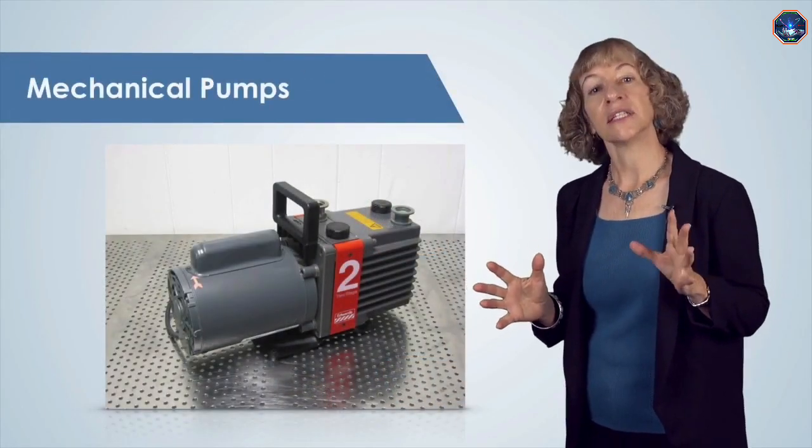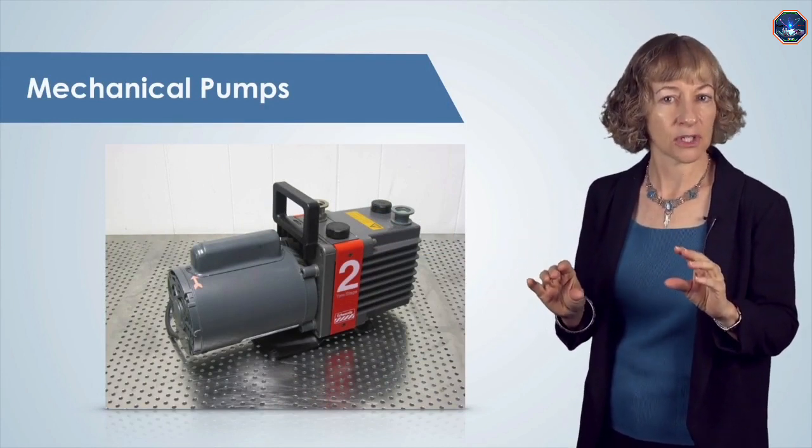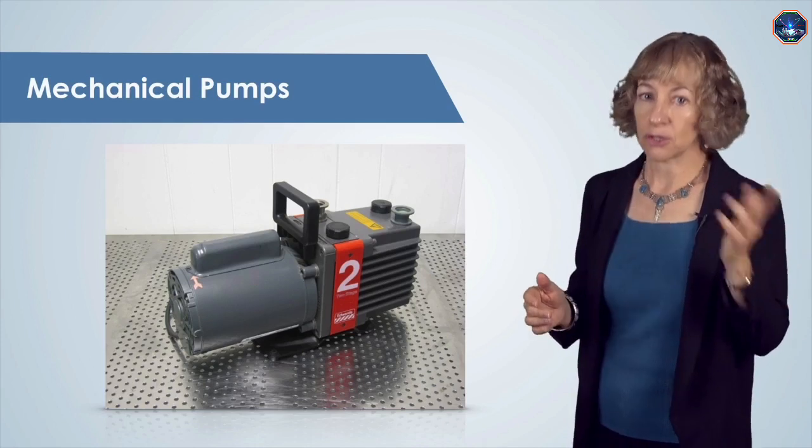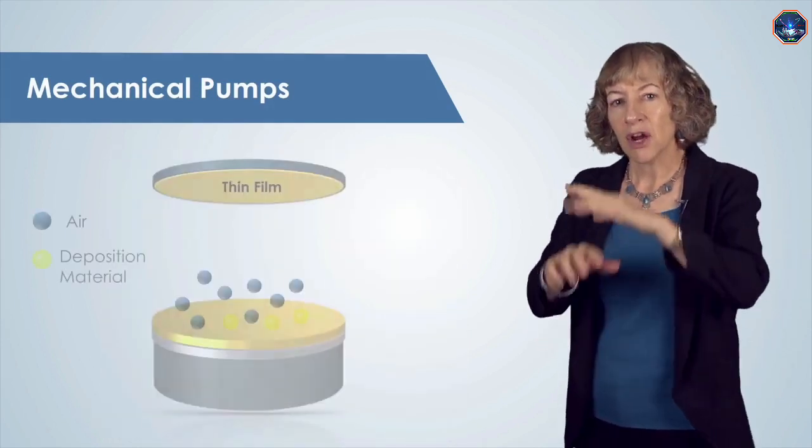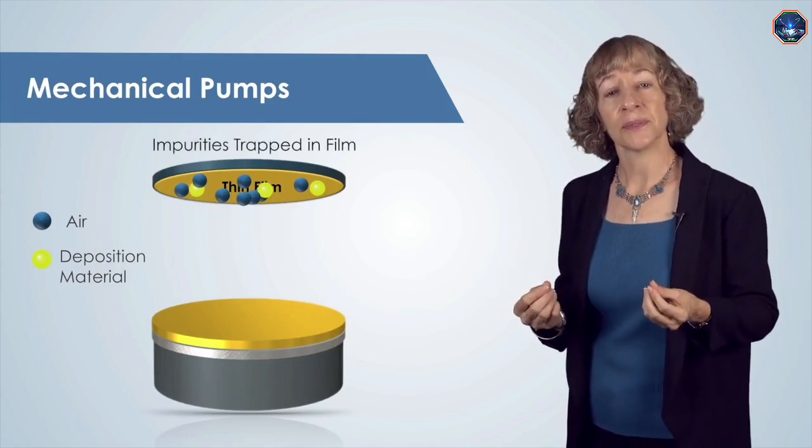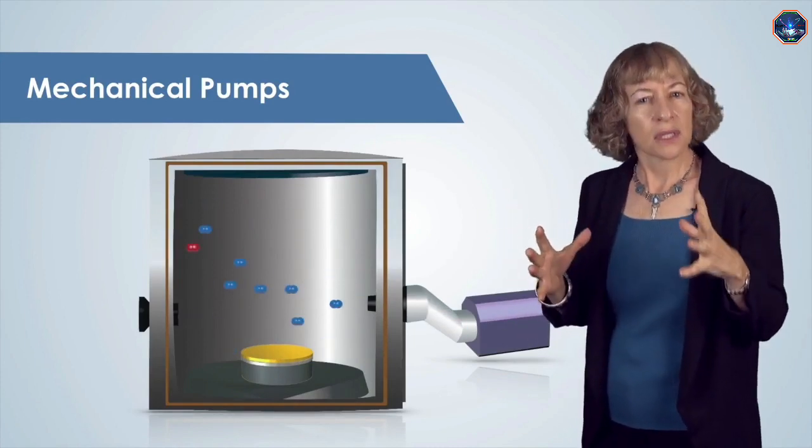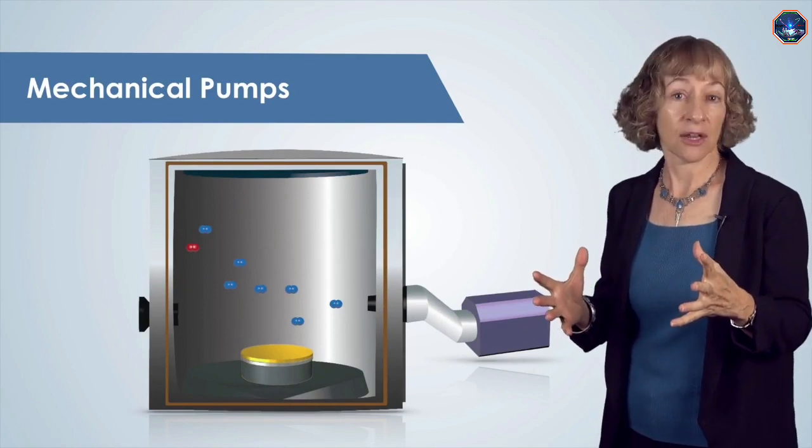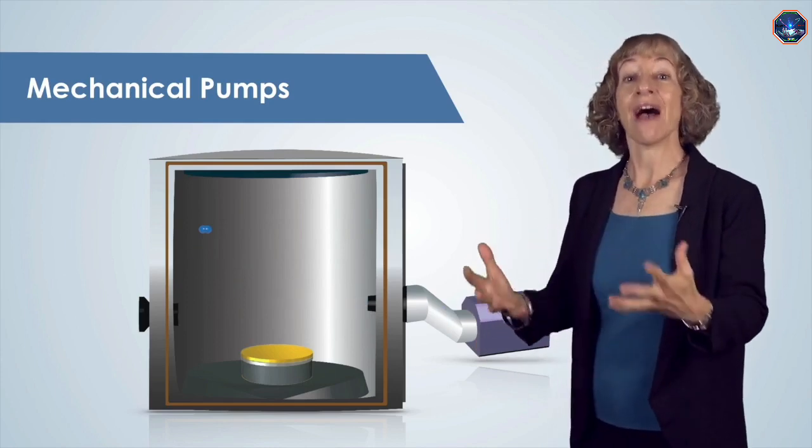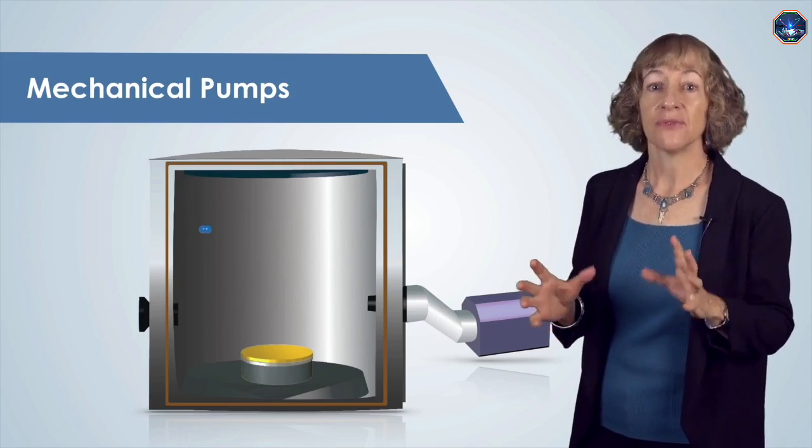Mechanical pumps alone cannot typically reach pressures low enough for thin film high-quality deposition, so we need to use another pump—a high vacuum pump—in addition to the mechanical pump. Remember that air molecules in the vacuum chamber will introduce impurities in the deposited film. We can use mechanical pumps to remove some of this air, but there is a limit to how many air molecules a mechanical pump can remove, so we need to continue to pump after we use a mechanical pump to achieve much lower pressures.